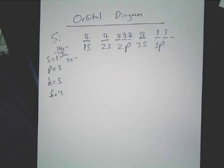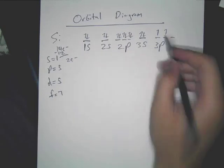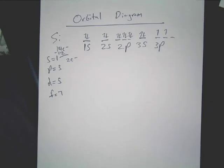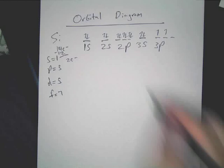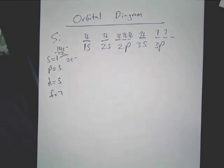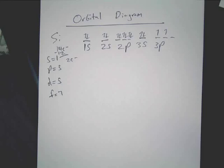Remember Hund's rule. As we're filling it in, do we ever double up unless we have to? No. So this is the correct orbital diagram configuration.